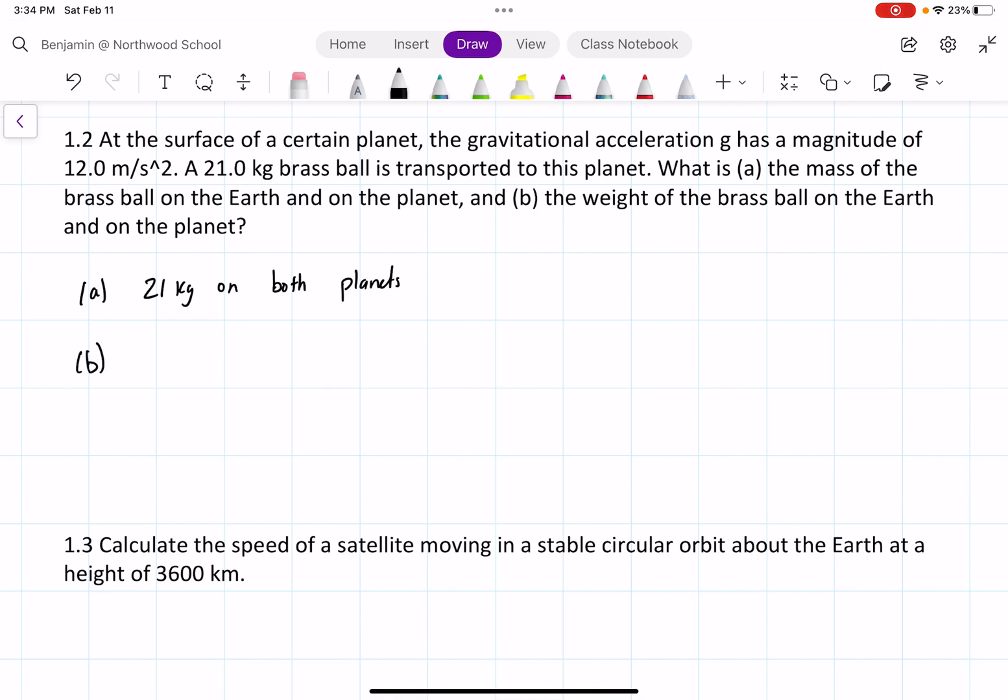For part B, what we're going to do is we're just going to multiply the mass by the gravity to get the force, or the weight. F equals mg.